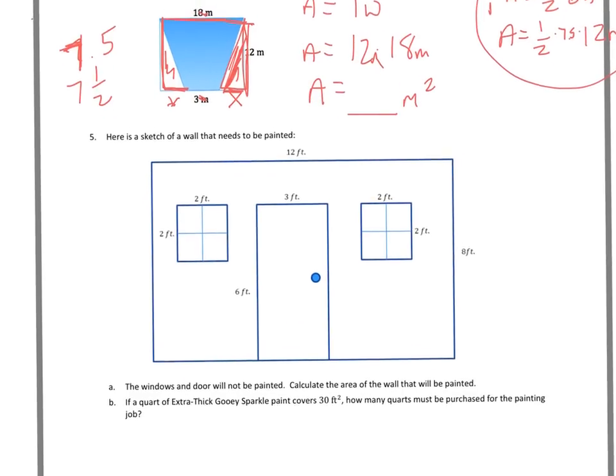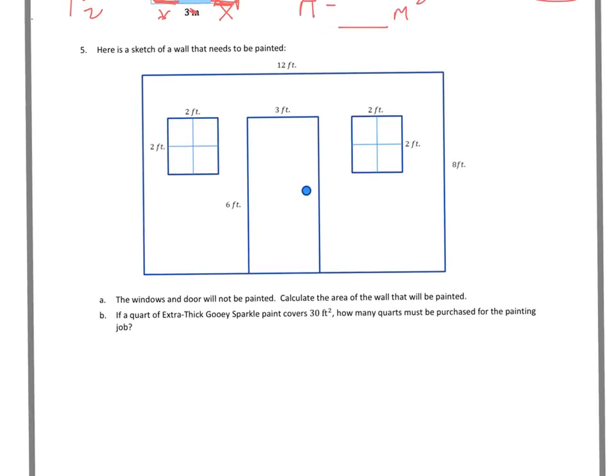Now, down below, we need to figure out how much it says, here's a sketch of a wall that needs to be painted. The windows and the door will not be painted.